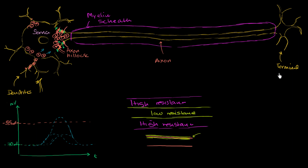So then you ask: why don't we boost the signal? How would you do that? You could keep the myelin sheath, but put gaps in it every so often. Those gaps would allow the membrane to interface with the outside, and in those areas you could place voltage-gated channels that can trigger action potentials — essentially boosting the signal. And that's exactly what the anatomy of a typical neuron is like.